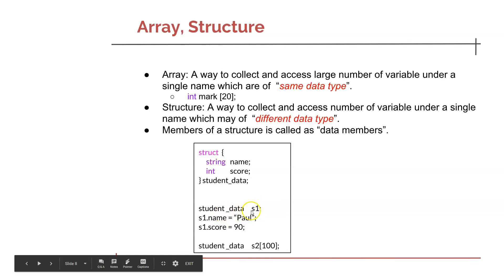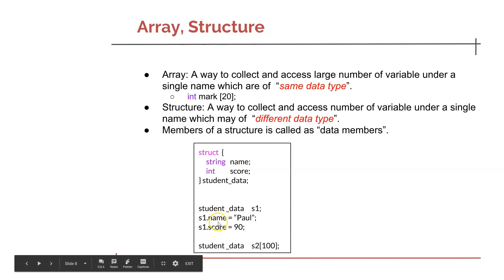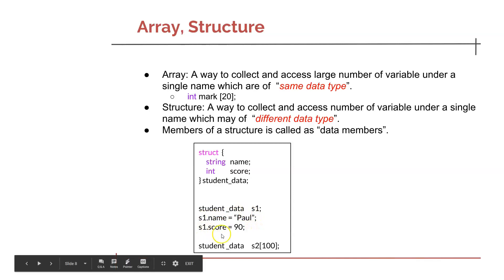Once you define a variable of structure data type, you will be able to access the individual data members like 's1.name' and 's1.score'. You can assign a string value to s1.name and an integer value to s1.score. You can also define an array of structure type, like 'student_data s2[100]', which allows you to save data for 100 students under the name s2.